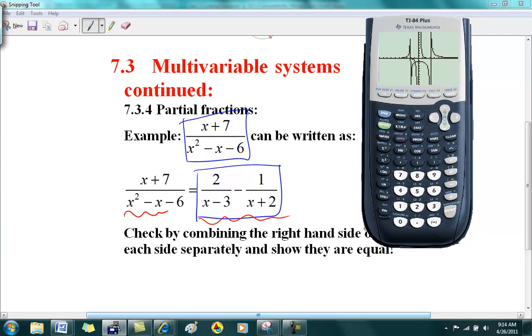So let's go check. x plus 7, x squared minus x minus 6, 2 over x minus 3 minus 1 over x plus 2. Check by combining the right hand side or graph each side separately and show they are equal. I guess that's supposed to be meant algebraically. Let's go take a look at the table and see if there's something else that's going on.